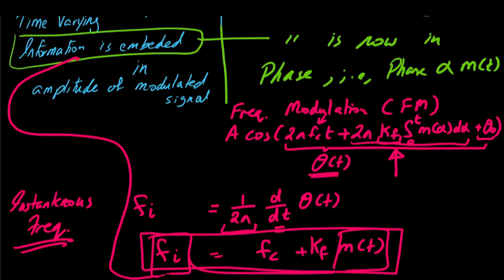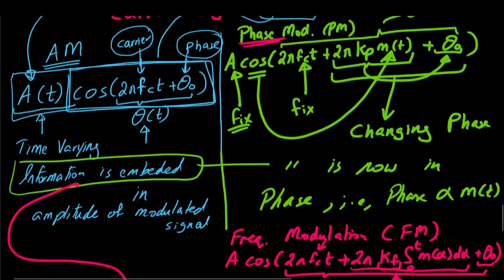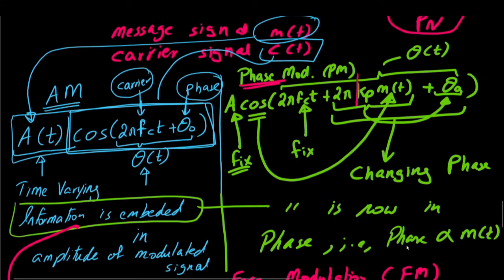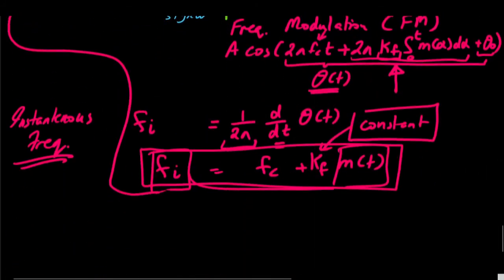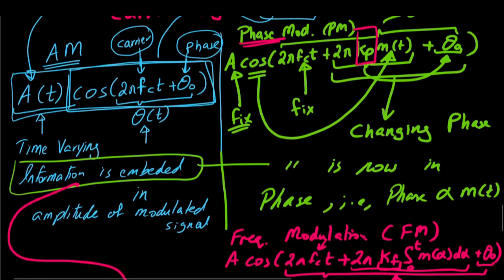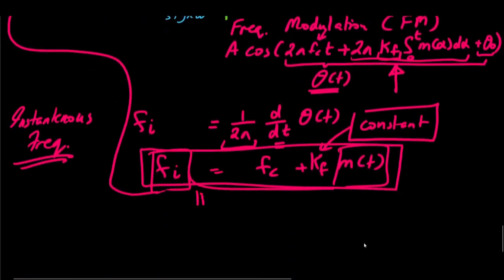In FM and PM, the constants used are called sensitivity parameters. In PM we have kp, and in FM we have kf. In the three schemes, either the amplitude is time varying, or the phase is time varying (phase modulation), or the instantaneous frequency is varying with respect to the message signal (frequency modulation).